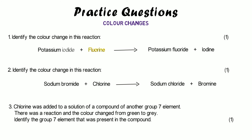For the first one: potassium iodide is colourless, fluorine is yellow, potassium fluoride is colourless, and iodine appears grey. So we've got yellow for the reactants and grey for the products — the colour change is yellow to grey. For the second one: the bromide in sodium bromide is colourless, chlorine is green, sodium chloride is colourless, and bromine on its own is brown. So reactants are green and products are brown — the colour change is green to brown. For the last one: the green colour at the beginning is coming from the chlorine on its own, and it's going grey. So we're looking for a grey group seven element that would have been displaced — and that's iodine. Iodine is causing the grey colour.